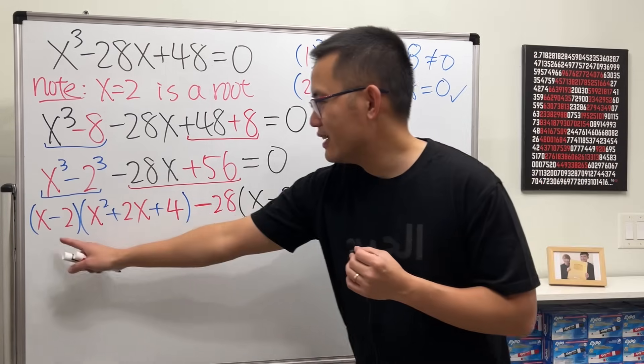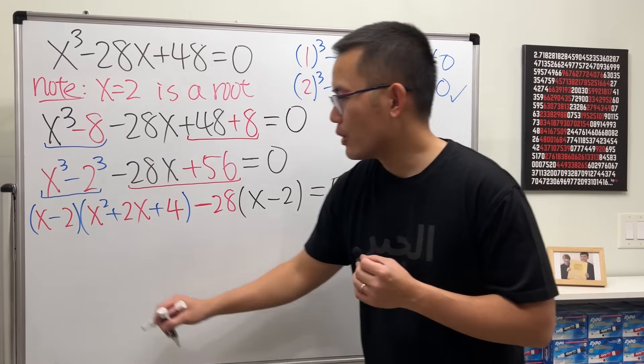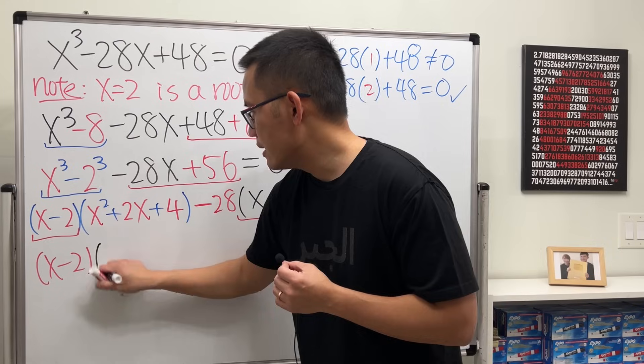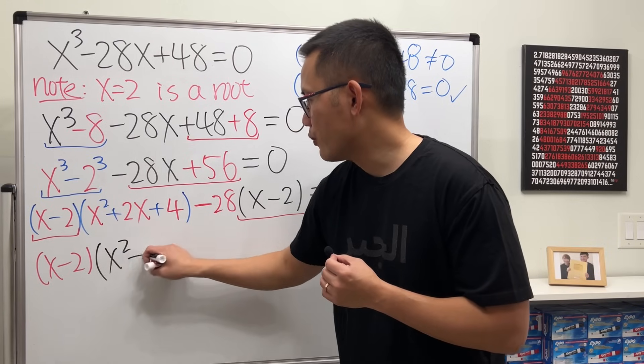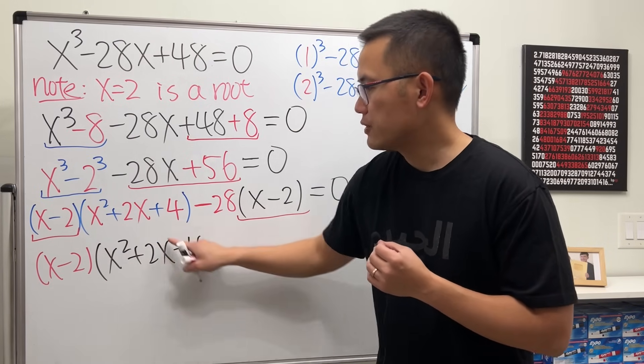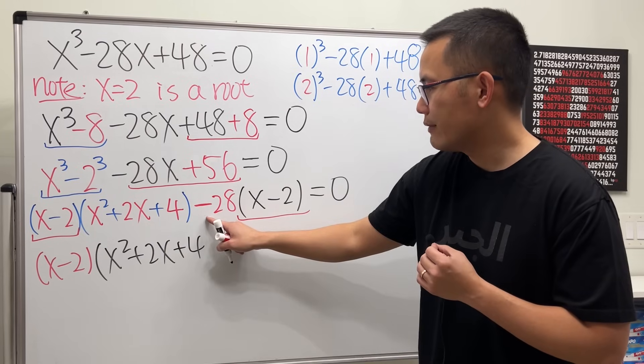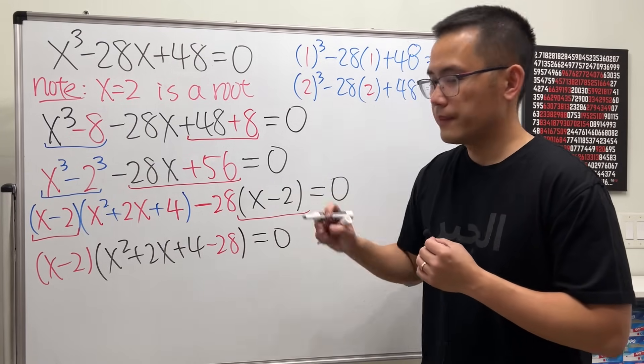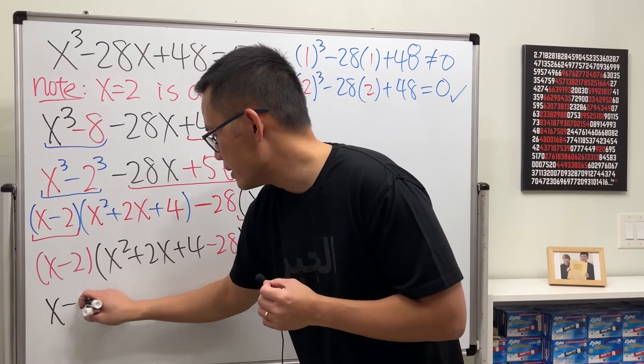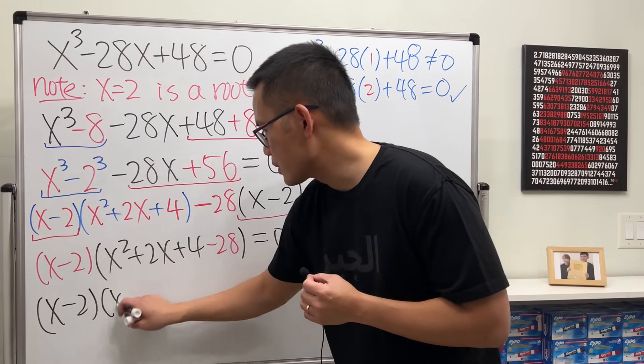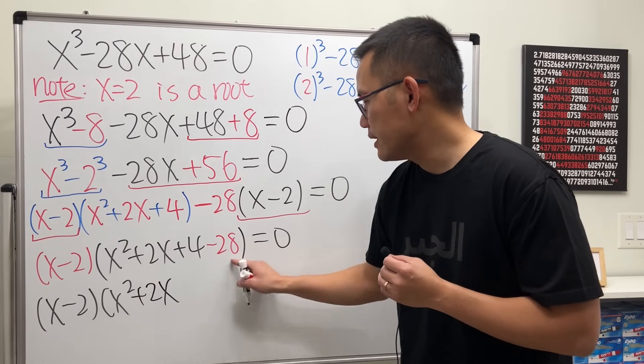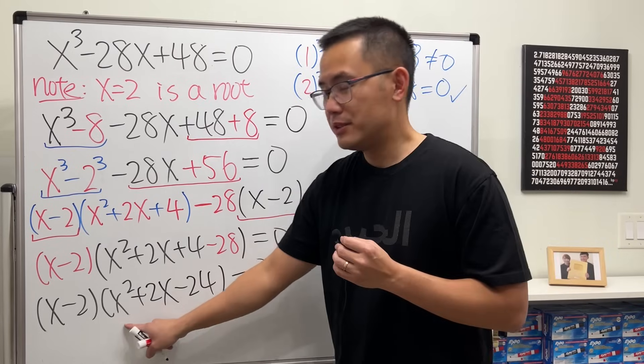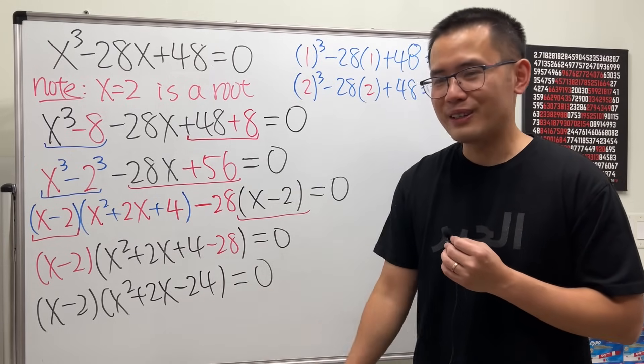Now look at this expression. We have (x minus 2) in common, so we can factor this out. And then this right here is just the leftover. So this is from here, and then we also have to write down the minus 28. Then we can work this out a little bit. So this is (x minus 2) times (x² + 2x - 24). As we can see, this is just a regular quadratic. We can factor it regularly.